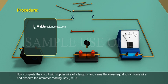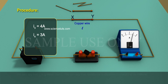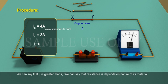Now complete the circuit with copper wire of a length L and same thickness equal to nichrome wire. And observe the ammeter reading. Say I4 is equal to 3A. We can say that I4 is greater than I1. We can say that resistance depends on nature of its material.